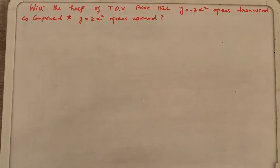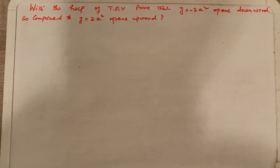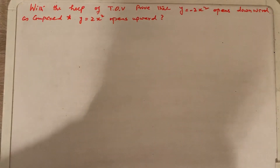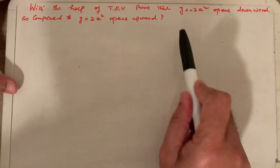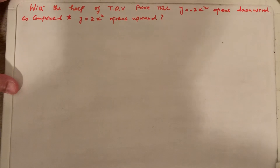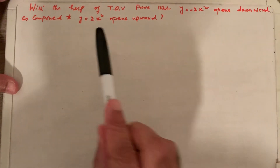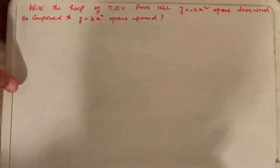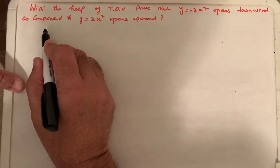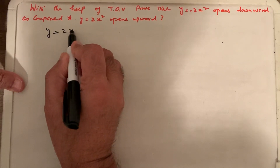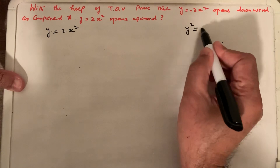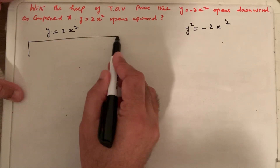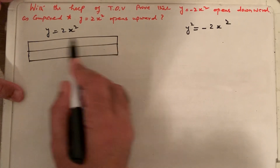Bismillahirrahmanirrahim, welcome to my channel Learn Math with Sayyad Ali. One of the students has given me this problem: prove that y equals minus 2x squared opens downward as compared to y equals 2x squared which opens upward. We have to create a table of values for the two functions y equals 2x squared and y equals minus 2x squared.